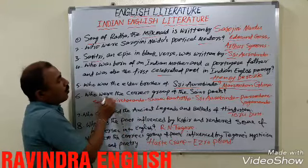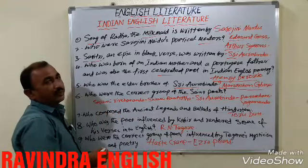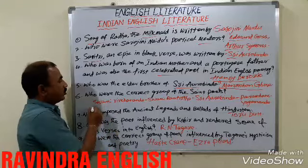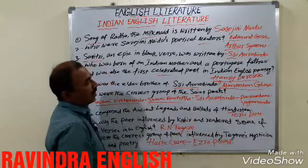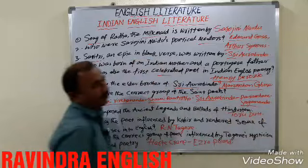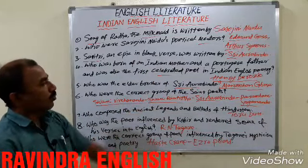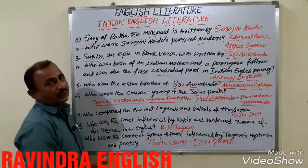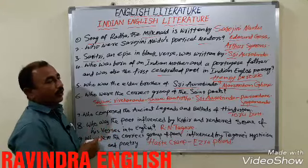Who are the correct group of Saint Poets? They are Bhakti poets. The four members are: Swami Vivekananda, Ramathirtha, Sri Aurobindo, and Paramahansa Yogananda. These four members are the correct group of Saint Poets — Bhakti poets.